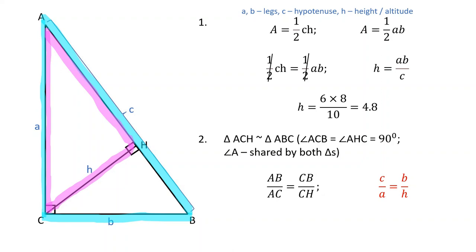C over A is equal to B over H. Therefore, H is equal to A times B over C.